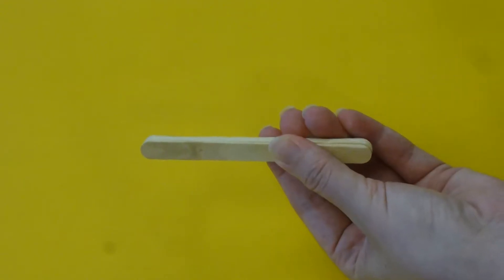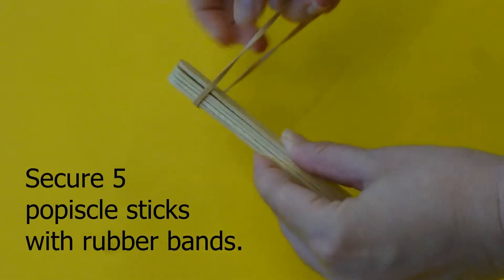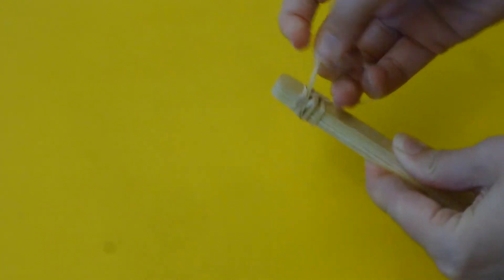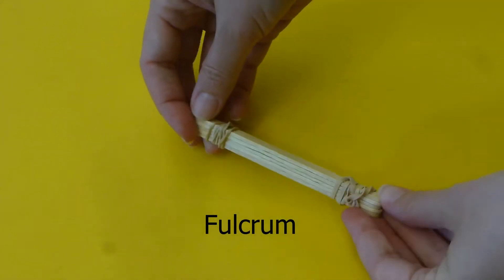First gather five popsicle sticks on top of each other and attach them at both ends with your rubber bands. Later, try adding more or less popsicle sticks here and see how the height affects your catapult. This will create our fulcrum.